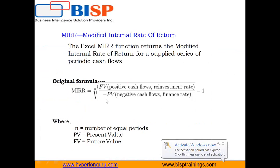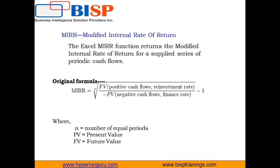The next function is MIRR, which stands for modified internal rate of return. The modified internal rate of return is a financial measure of an investment's attractiveness, used in capital budgeting to rank alternative investments of equal size. As the name implies, MIRR is a modification of IRR and aims to resolve some problems with the IRR.